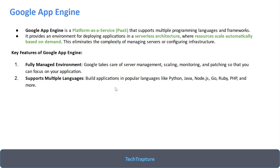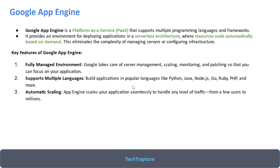App Engine supports multiple languages including Python, Java, Node.js, Go, Ruby, PHP, and others. Automatic scaling is built in — your application will scale to handle any level of traffic, from a few users to millions of users. If there are only hundreds of users it will use a small infrastructure, perhaps one or two instances, but if there are millions of users it can scale up to 50 or 100 instances automatically.